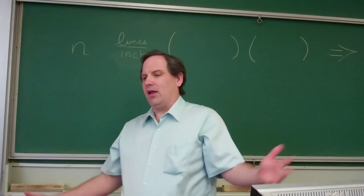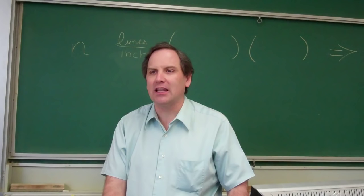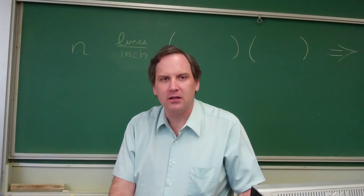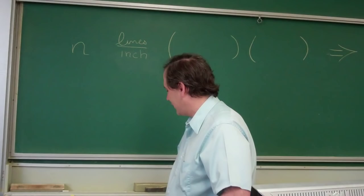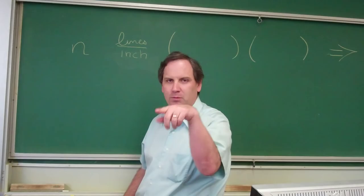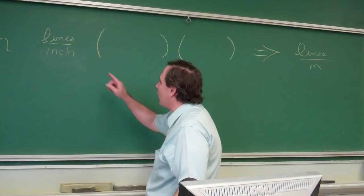Now, so you've got the number of lines per inch. Well, that's useful to nobody, because we don't do things in lines per inch. What do we do things in? We don't use inches. We use real units. Like what? Meters. Furlongs. That's an eighth of a mile. No.